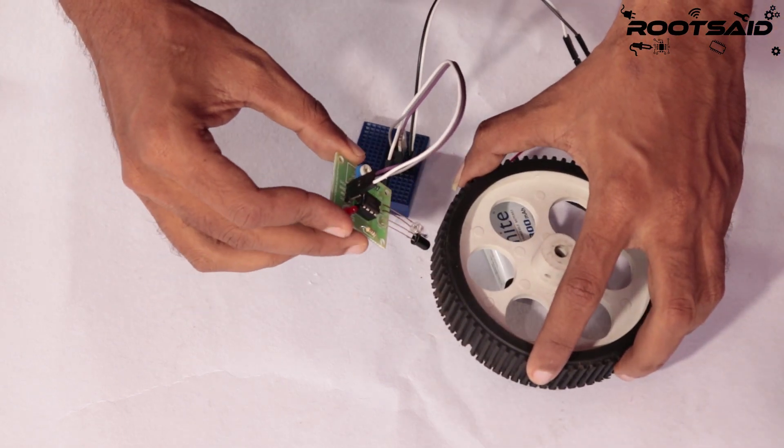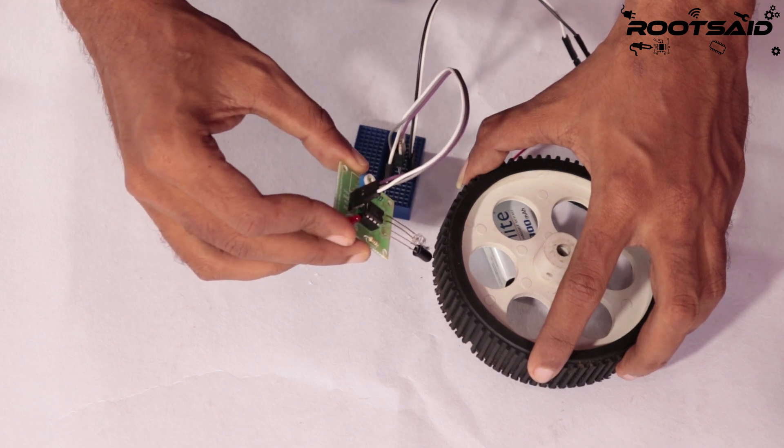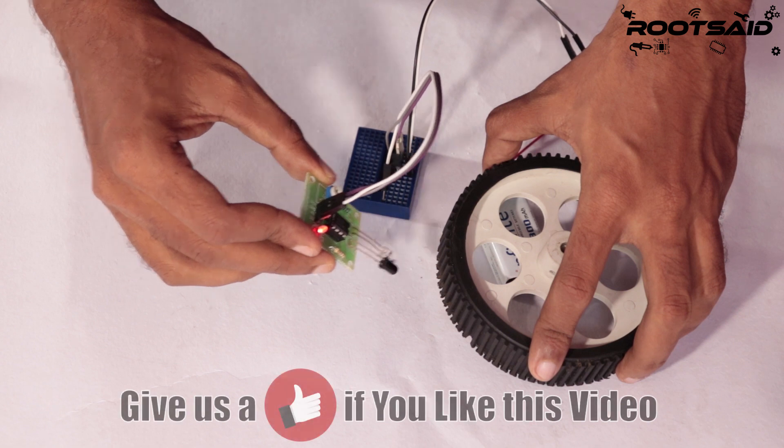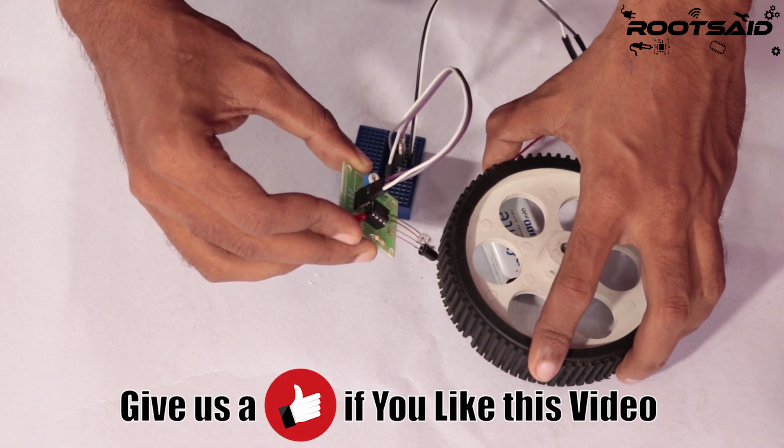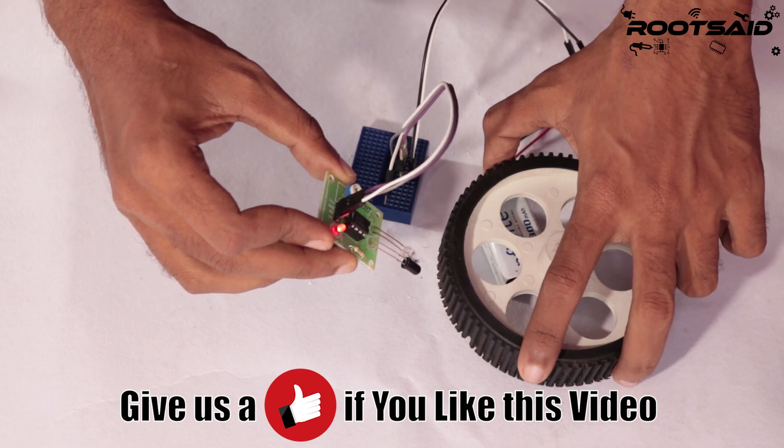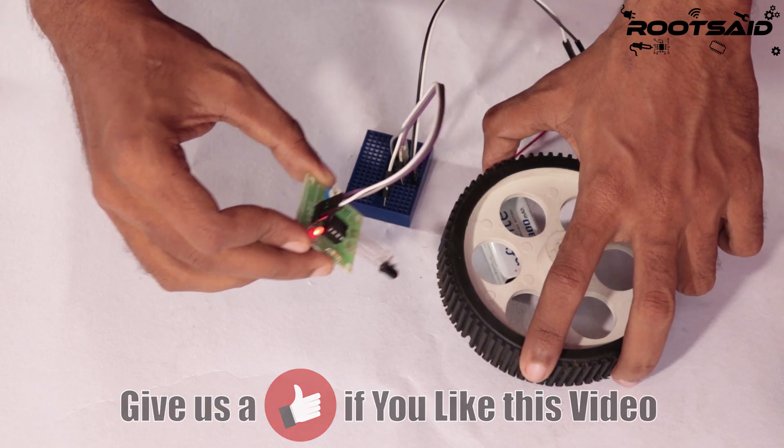These reflected rays are received by the photodiode, and depending upon the intensity of the received IR rays, the resistance of the photodiode varies, which will in turn vary the output voltage. Thus it is possible to sense the color of the surface by looking into the reflected IR rays.